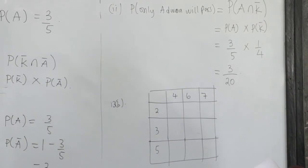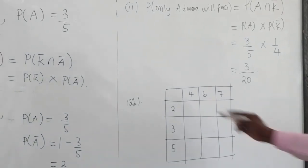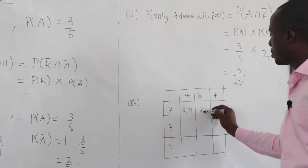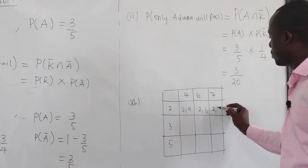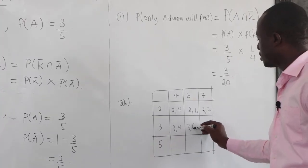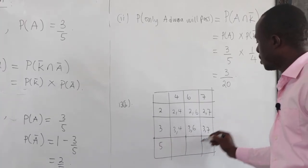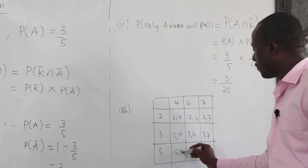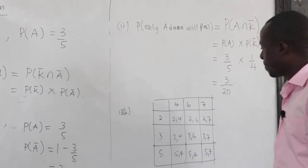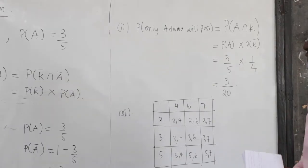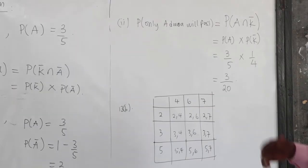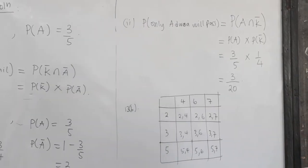We want to find the sum of one number selected from each set. The possible sums are: 2+4, 2+6, 2+7, 3+4, 3+6, 3+7, 5+4, 5+6, and 5+7. The question asks us to find the probability that the sum of the numbers selected is greater than 9.